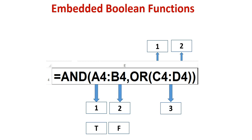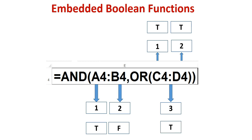This AND function has two arguments. The first argument, C4, contains the value true. The second argument, D4, contains the value true. In an OR function, if either argument or any argument is true, the whole function evaluates to true.